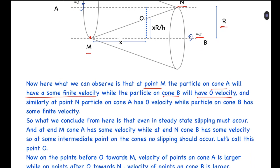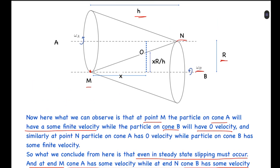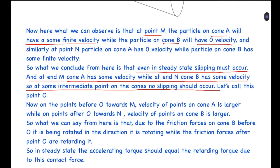Even in steady state, slipping must occur. At end M cone A has some velocity, and at end N cone B has some velocity, so at some intermediate point on the cones no slipping should occur — let's call this point O. The velocity of cone A varies from omega_a times r down to zero, and that of B from zero up to omega_b times r, so at some point on the slant height their velocities should be equal.